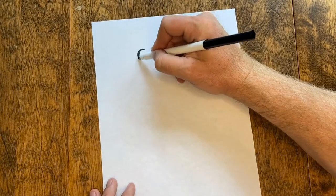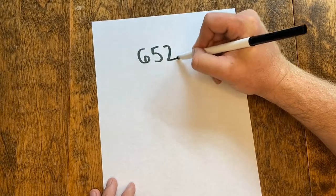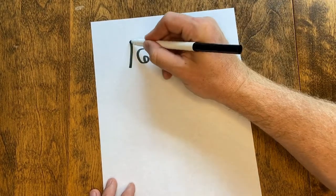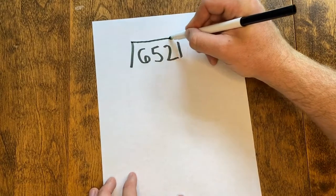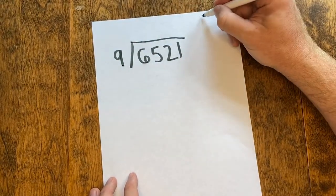The first thing we want to do is copy our numbers from the computer screen to our scrap paper, double checking just to make sure we got the digits correct. 6521 divided by 9.